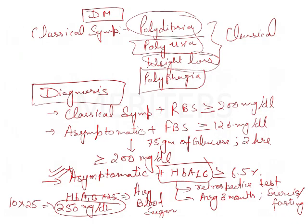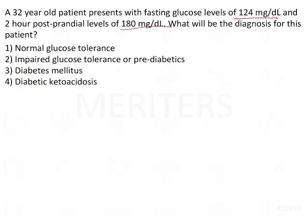Looking at this question, the patient's fasting glucose level is 124, which is less than 126 mg per deciliter. At the same time, the postprandial levels are 180, which is less than 200 mg per deciliter. Therefore, the patient cannot be called diabetic.